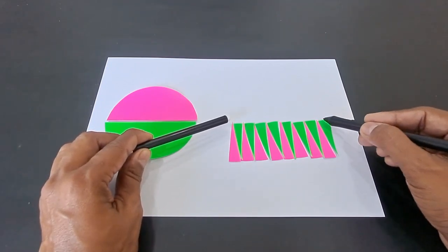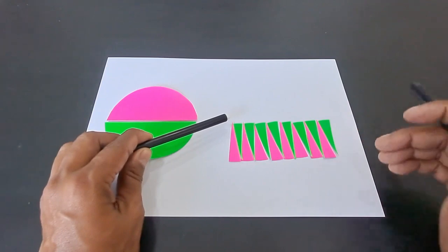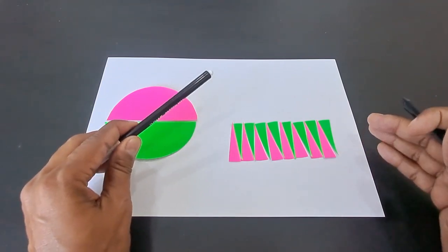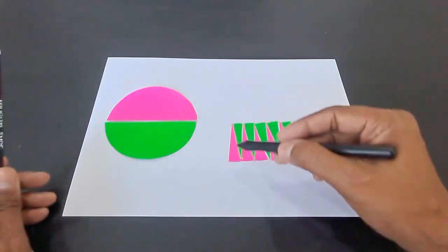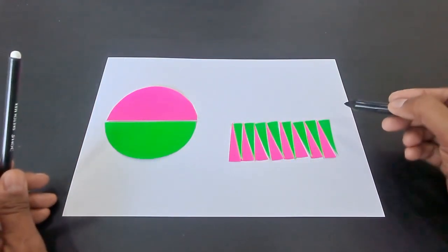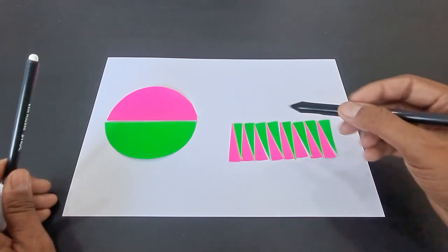If you take smaller sectors, then this will be closer to a rectangle. But if you assume this shape as a rectangle, which will be eventually formed when you make smaller sectors, then let's find the dimensions of this figure.